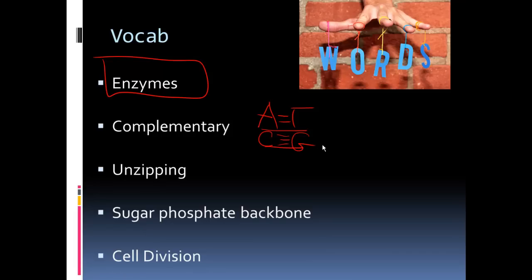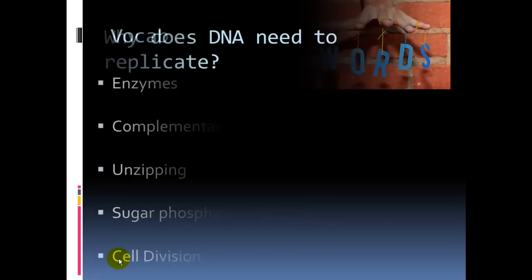Unzipping is going to be what happens between the two bases. If we still have that image of the ladder, imagine taking a saw and cutting that ladder in two halves. The sugar phosphate backbone, again, if we remember, we have two backbones on the outside of our two strands of DNA, and we need to understand that cells, to continue, must divide, and to divide, the DNA must replicate before division occurs.